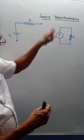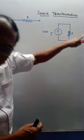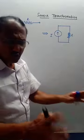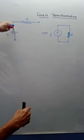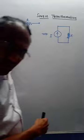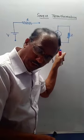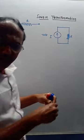Using source transformation, we can convert a voltage source into a current source. Stick to the basics: in case of a voltage source, resistance must be in series with the voltage source, whereas for a current source, resistance must be in parallel.